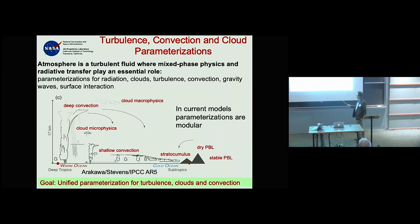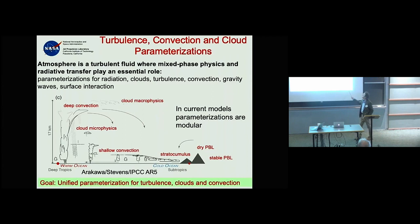As you go closer to Hawaii, there is less subsidence and warmer waters, then you have shallow convection. In the deep tropics there is deep convection. And in most of our weather and climate models, different subroutines and algorithms represent these different types of mixing.